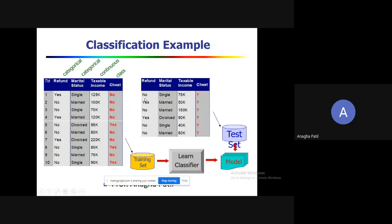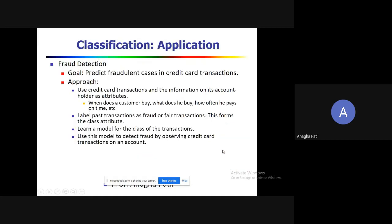For the test set, consider a sample where refund is no, marital status is single, and taxable income is 75k. Since this does not meet the rule requiring taxable income greater than or equal to 85k, the predicted class label is no. The remaining samples are similarly classified. Applications of classification include fraud detection, where the approach predicts fraudulent cases.